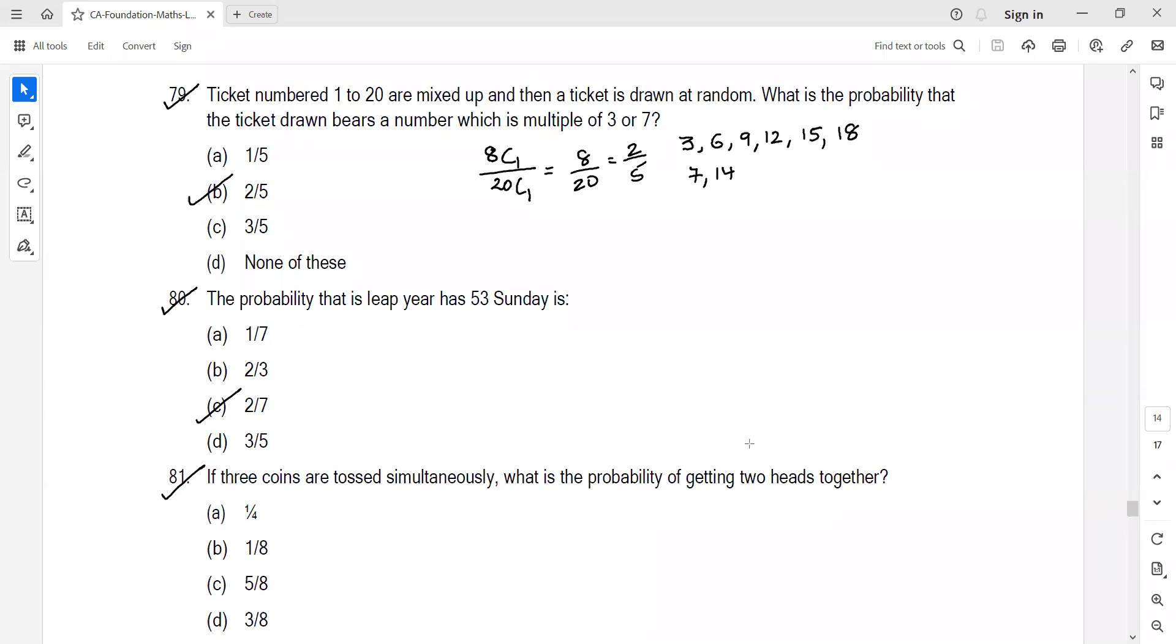Question 81: Getting two heads together. I'll give you a hint. Make the sample space: HHH, HHT, HTH, HTT, THH, THT, TTH, TTT. I'll leave this to your understanding.